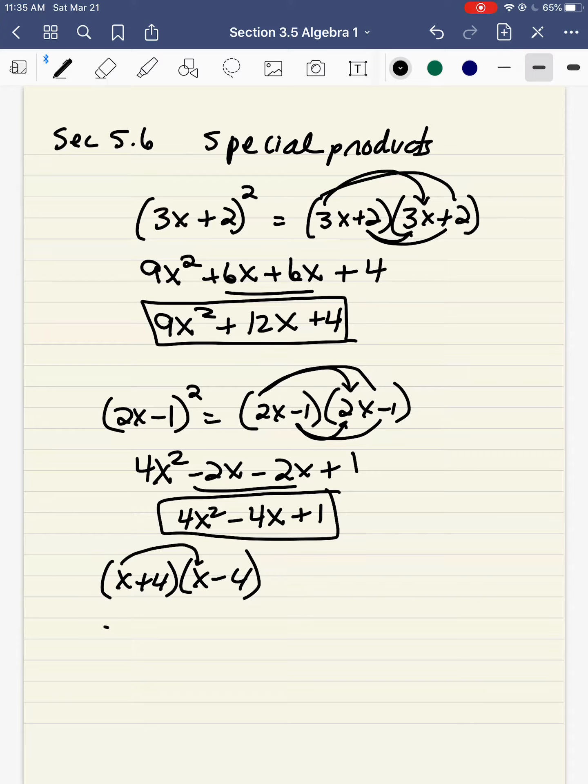This one here, again, I distribute. x times x is x squared. x times minus 4 is minus 4x. 4 times x is plus 4x. 4 times minus 4 is minus 16.